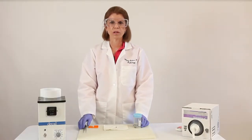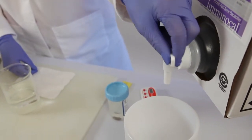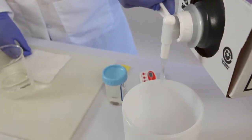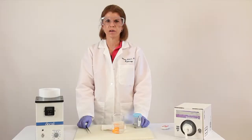So start by pouring your decalcifying solution into a beaker. I use ImmunoCal from DeCal for bone cores. In addition to having these little cube containers that are easy to pour, it's a very mild formic acid decalcifier.